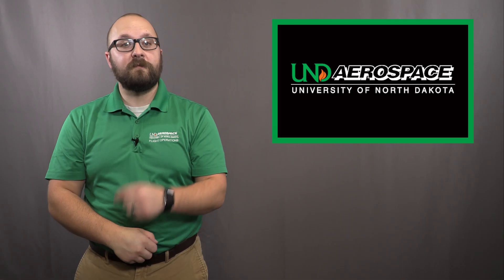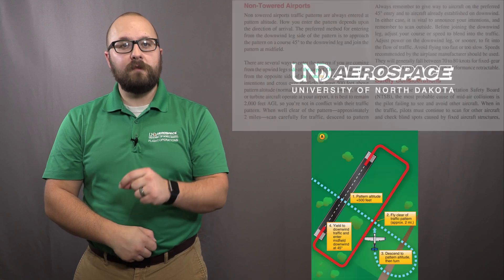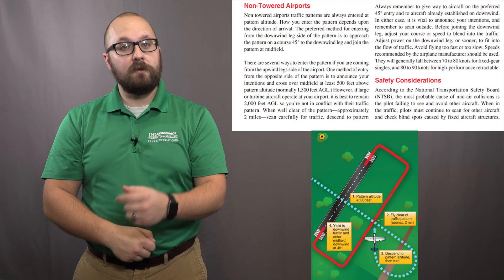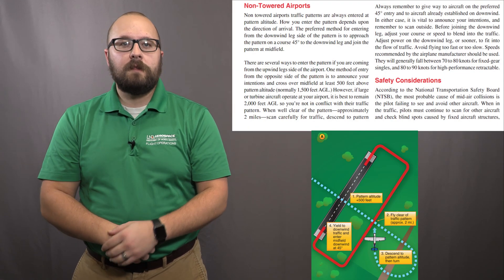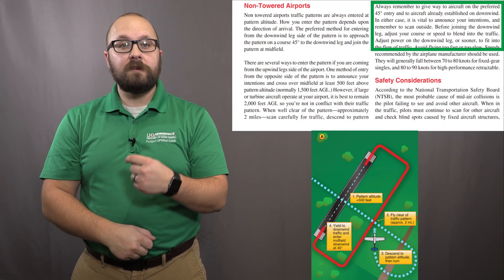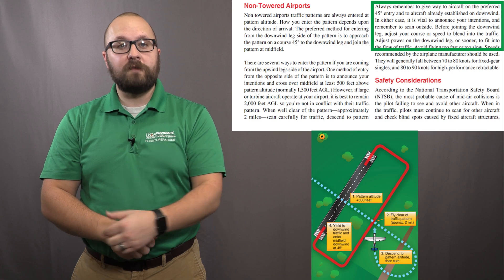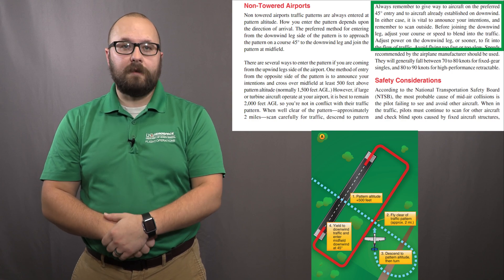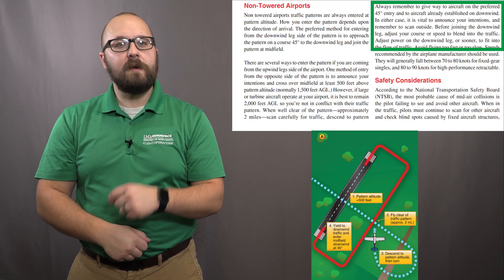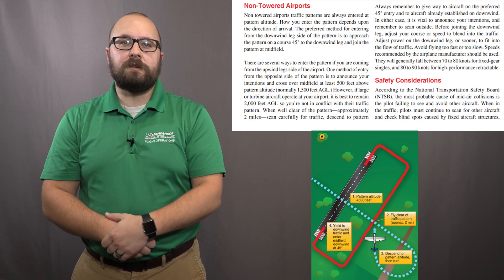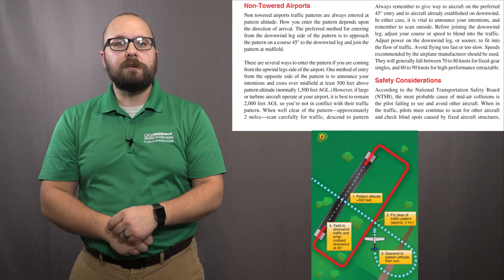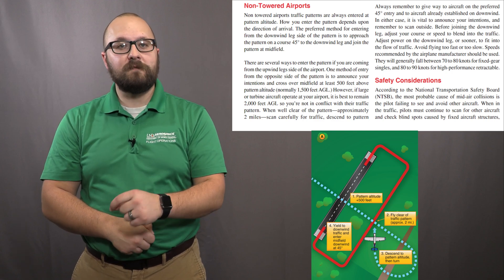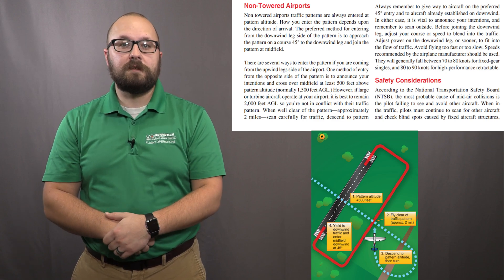As a friendly reminder, if you have more than one airplane entering the traffic pattern at the same time, the airplane entering via the standard 45-degree entry will have the right-of-way. You may have to adjust your speed to allow for traffic flow. Be sure to communicate with each other to safely sequence yourselves into the traffic pattern.